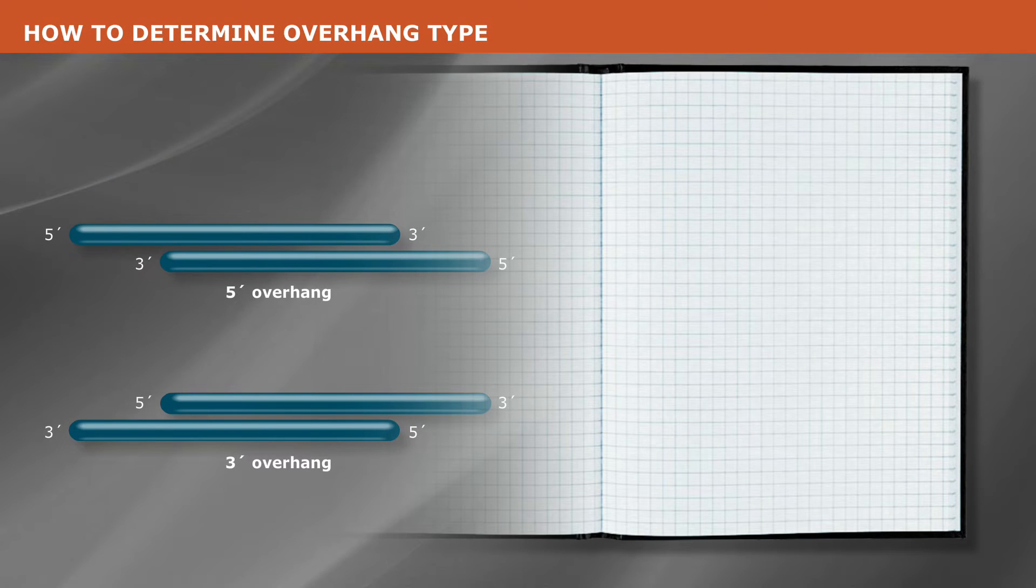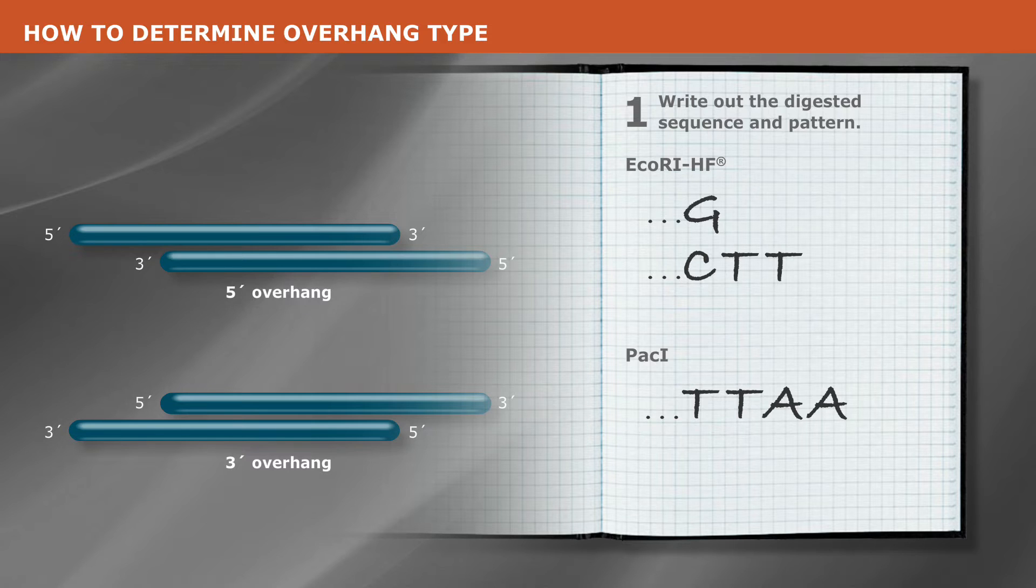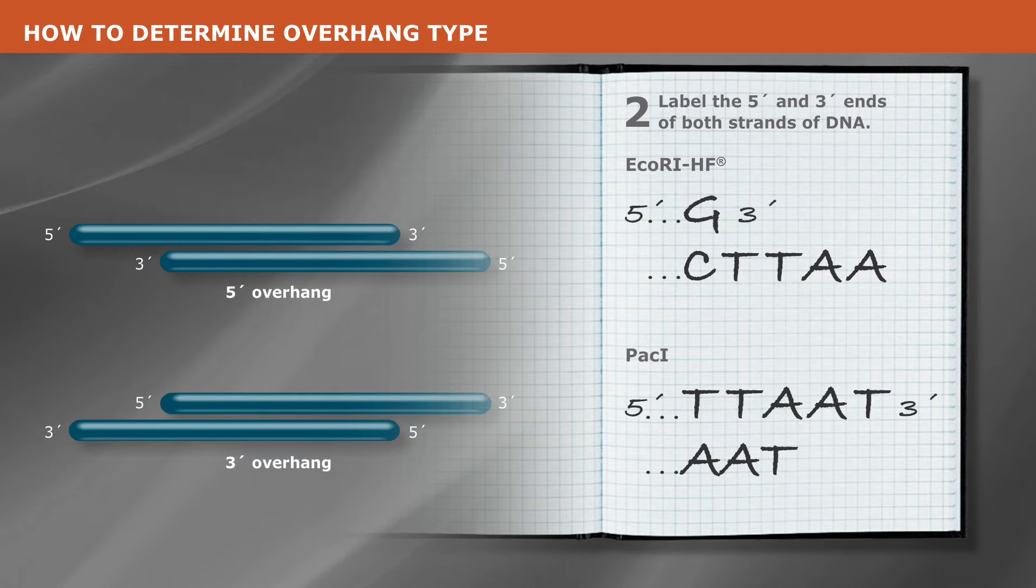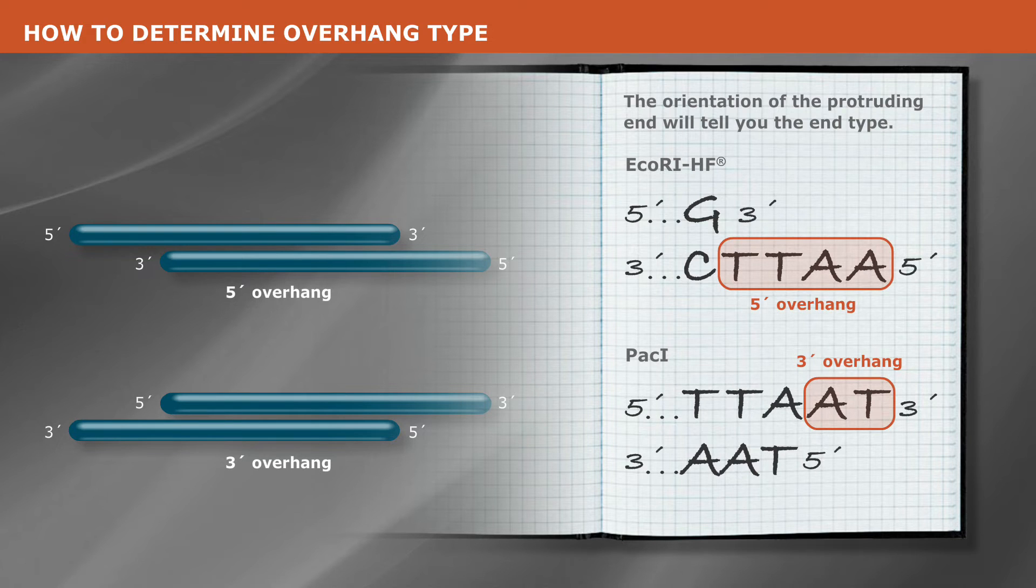The first step is simply to write out the digested sequence and pattern. Then, label the 5' and 3' ends of both strands of DNA. Quite simply, the orientation of the protruding end will tell you what type of fragment end you're dealing with.